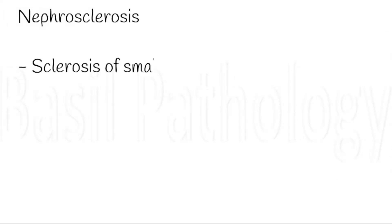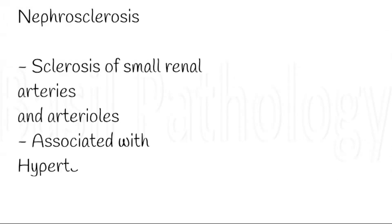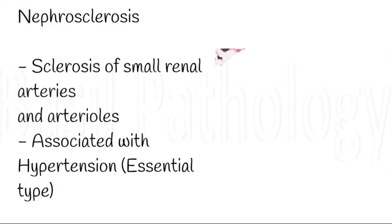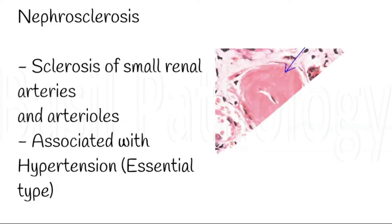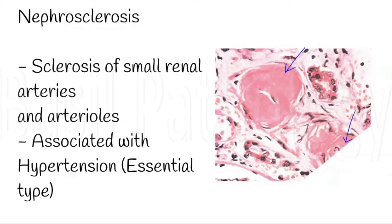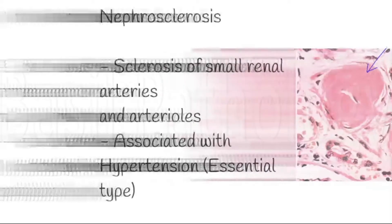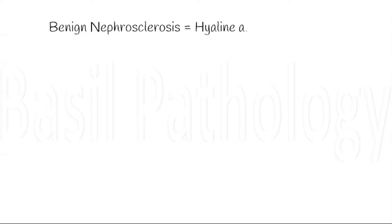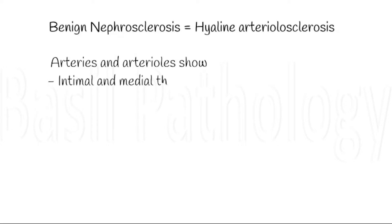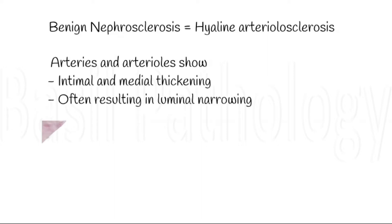Let us first look at nephrosclerosis. Nephrosclerosis is defined as sclerosis of the small renal arteries and arterioles. This is almost always associated with essential hypertension. It is otherwise called benign nephrosclerosis or hyaline arteriolosclerosis, in which the arteries and arterioles show intimal and medial thickening, often resulting in luminal narrowing.